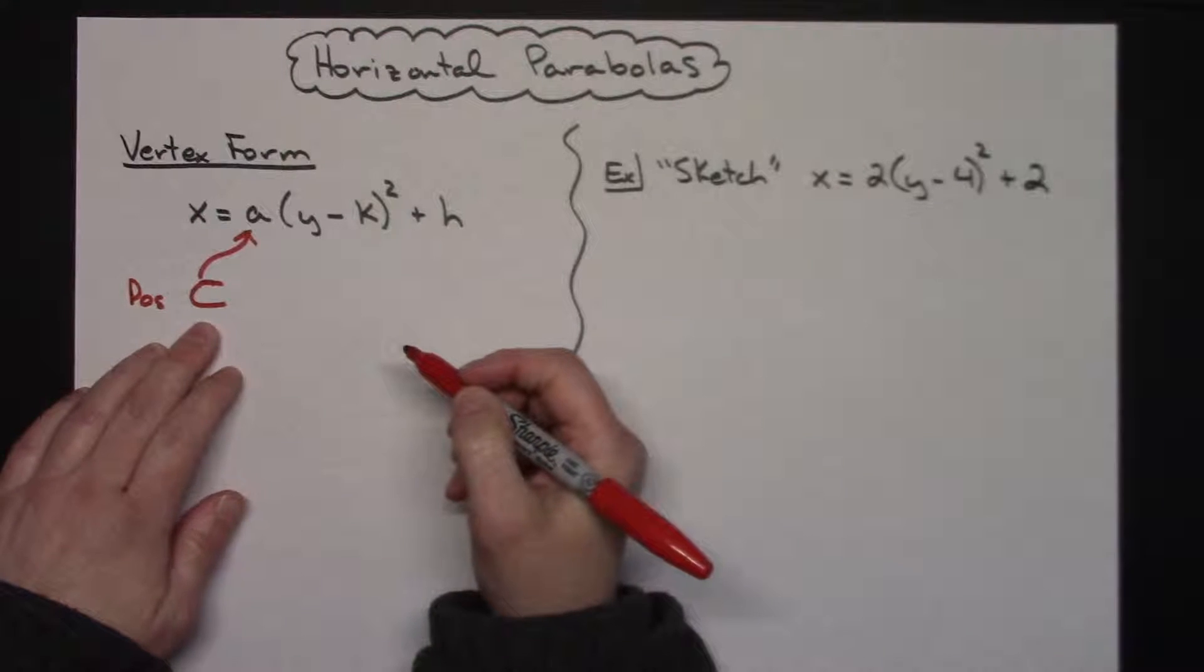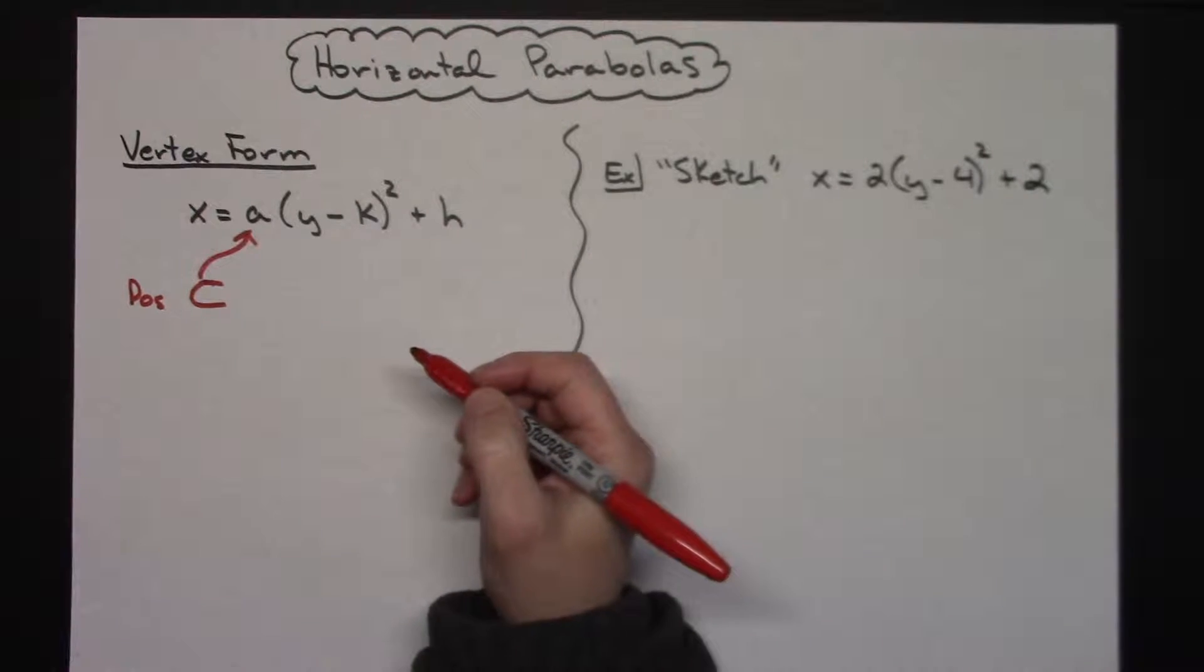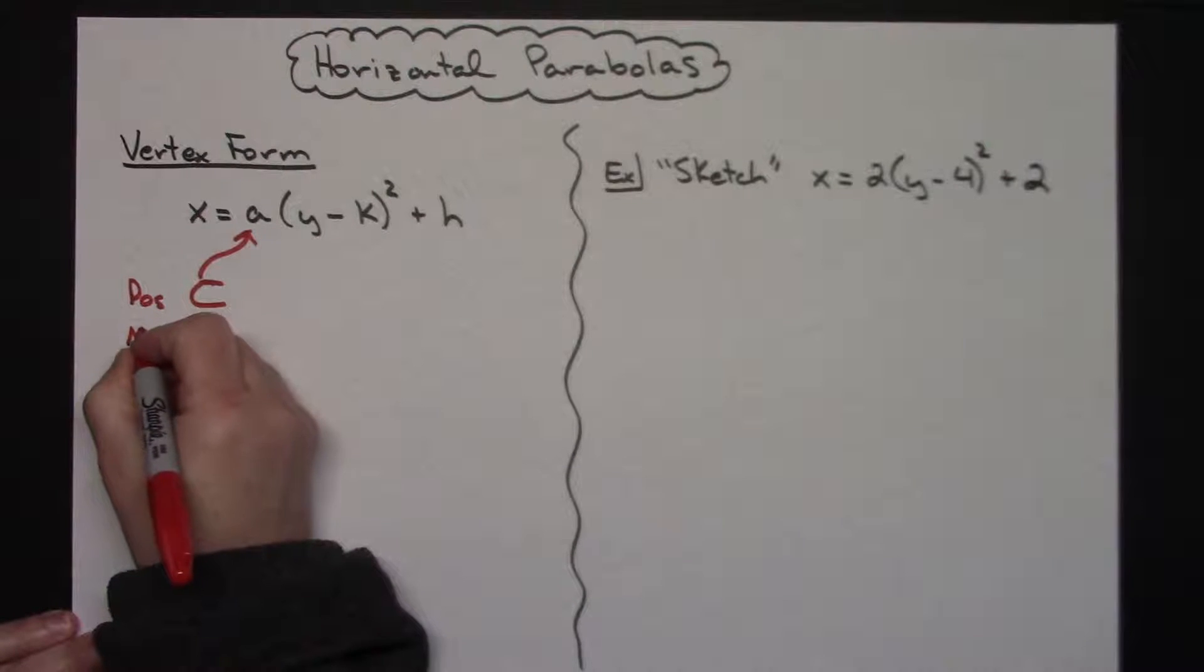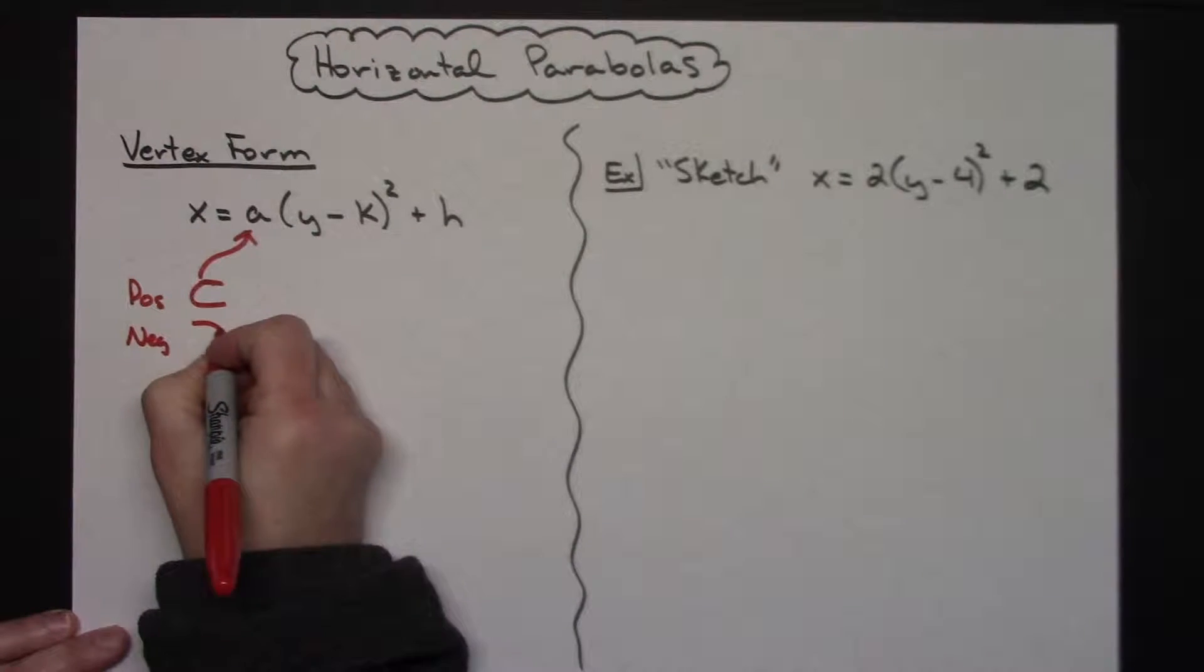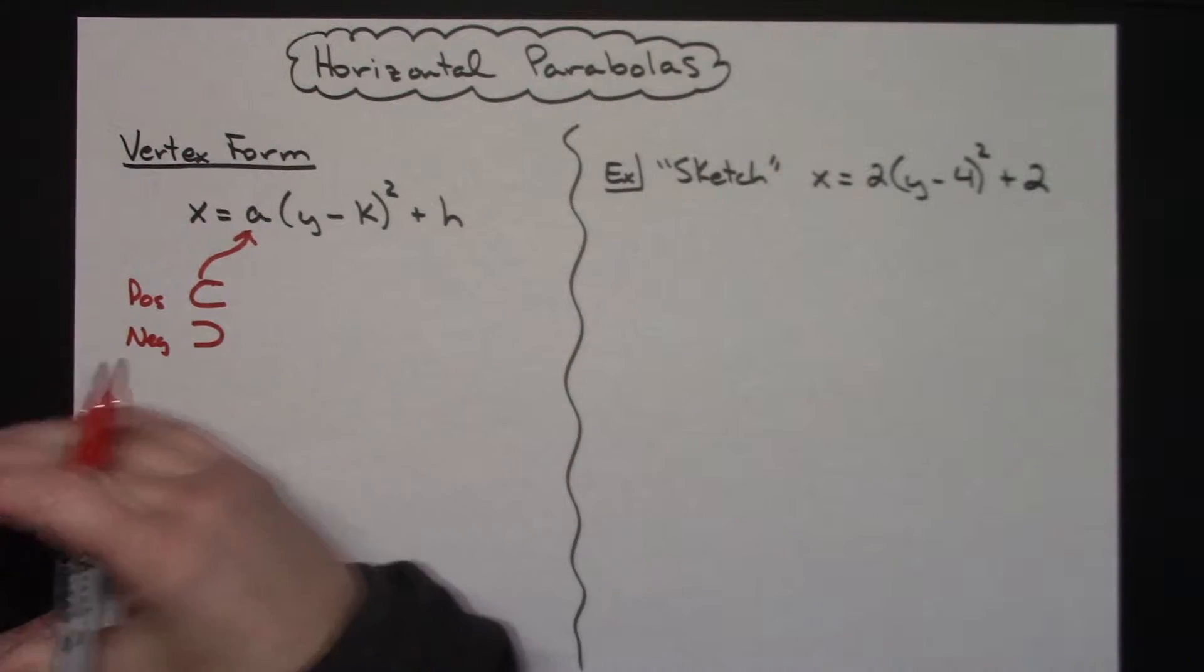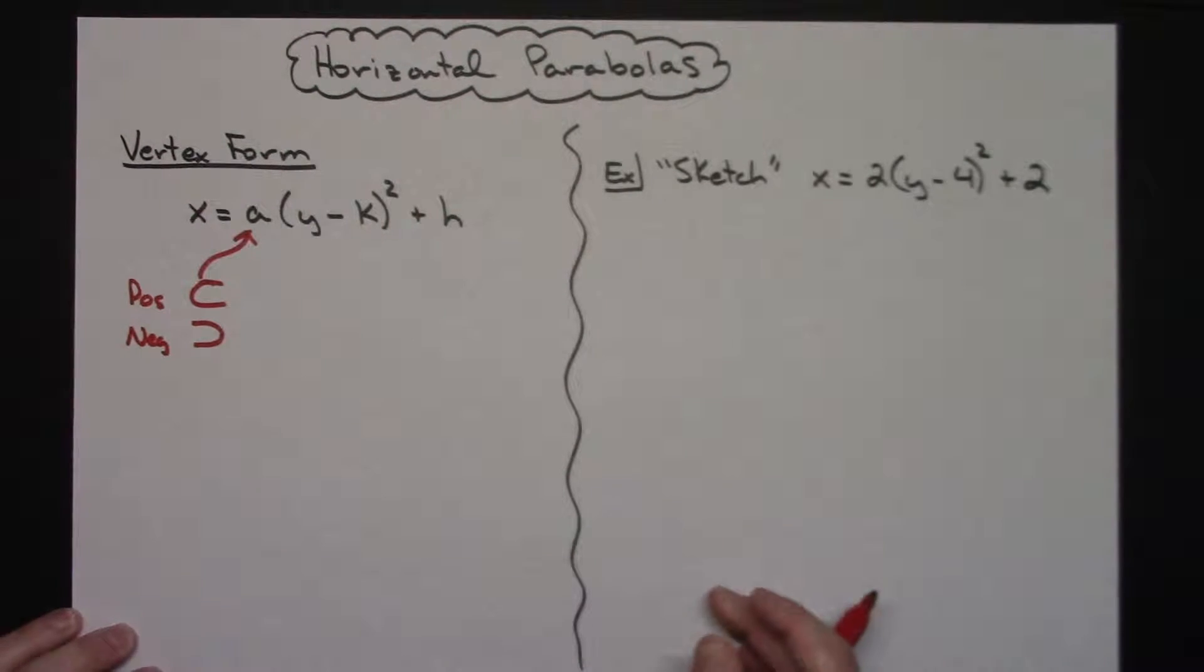And to me, I kind of think of that as it's encompassing all the positive values. If it is a negative, then it is going to be opening to the left, and again, it would be eating like the negative numbers over there on the number line.